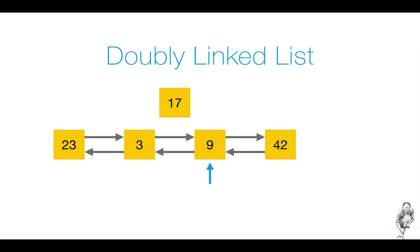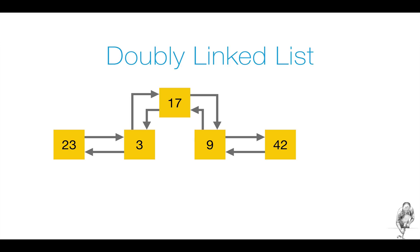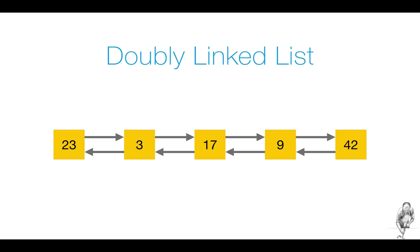Based on the two-way linked structure, adding or removing an element before or after the current element is relatively easy. Here we will add element 17 before the current element 9. The backlink from element 9 to element 3 is removed and replaced by a backlink from 17 to the next element 9. Next we place a backlink from 17 to 3. The old link from element 3 to 9 is replaced by a link from 3 to 17. Removing an element from a doubly linked list has the same steps as inserting an element, just in reverse order.